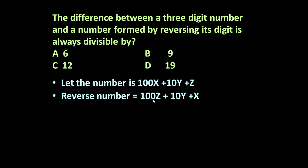Now let us reverse this number. The reversed number will become 100Z + 10Y + X, because at the unit place X will come and at the 100th place Z will come. Y will remain in the same position. Now let's find the difference of these two numbers.